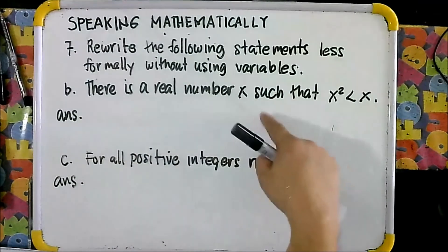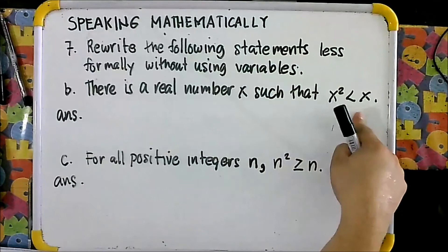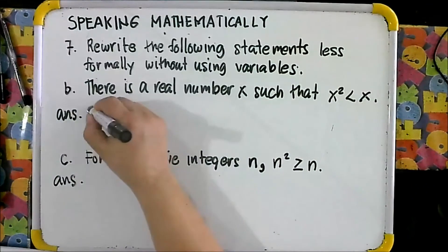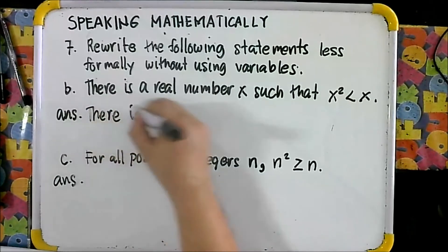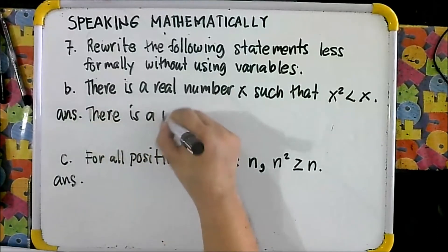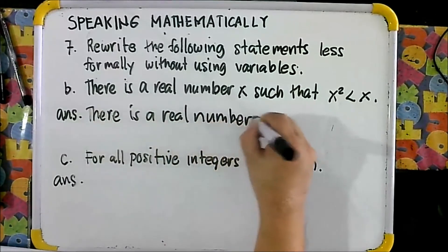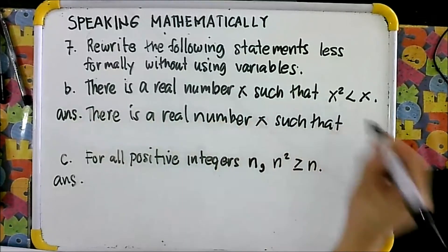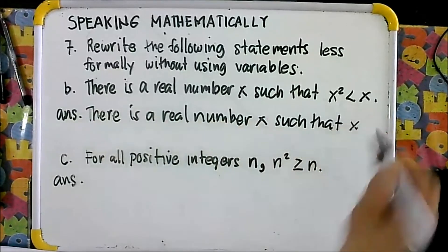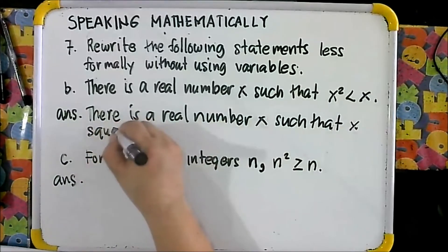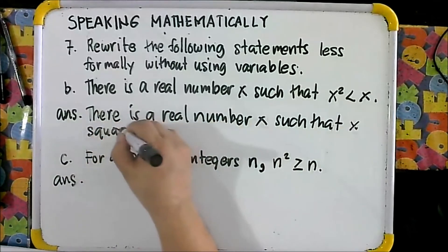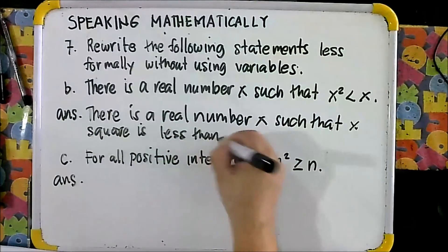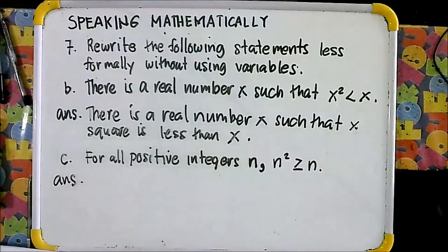For letter B: there is a real number X such that X squared is less than X. That is your answer.